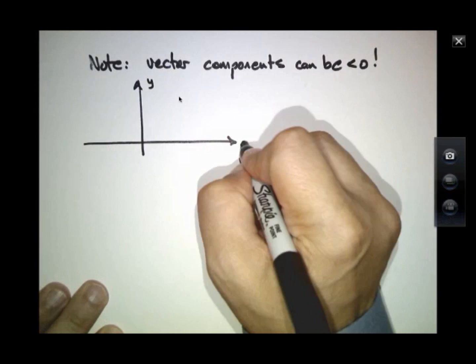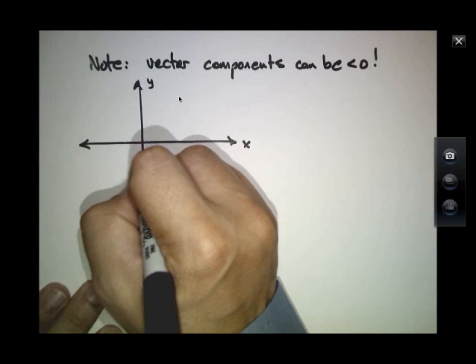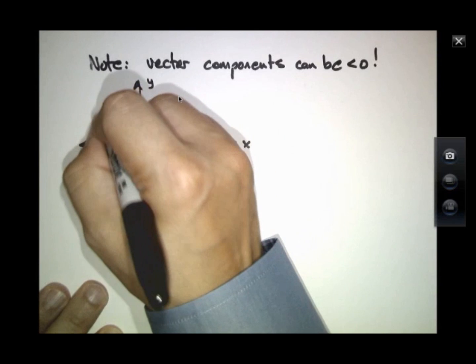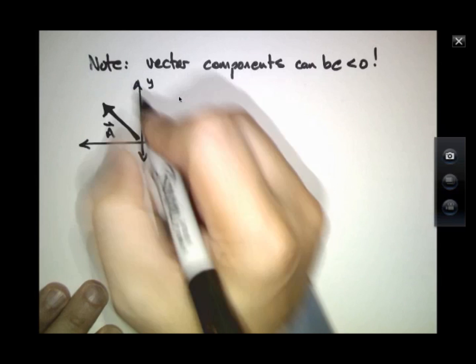So this is the Y direction, this is the X direction. Suppose my vector is A, and it looks like that.